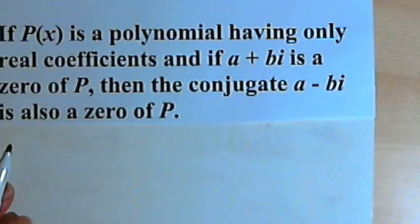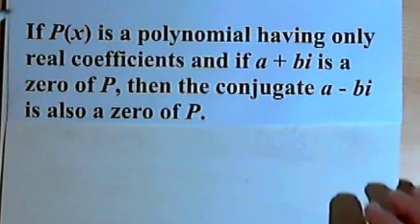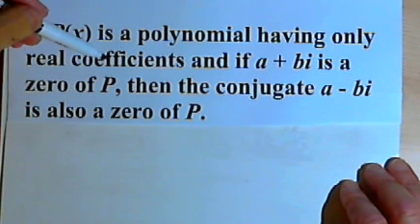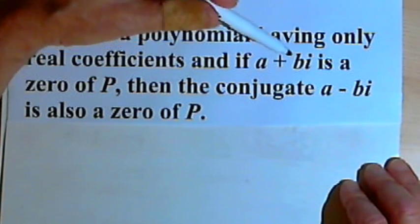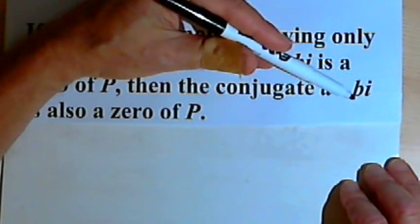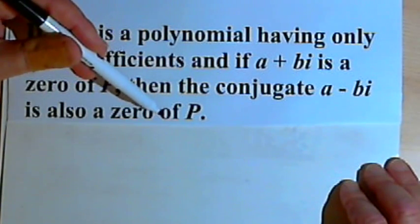The conjugate zeros theorem says this: If P is a polynomial having only real coefficients, and if a plus bi is a zero of P, then the conjugate a minus bi is also a zero of P.